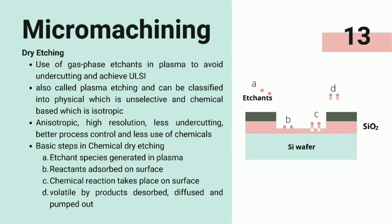The basic steps in the dry etching process are: etchant species or reactants are generated in plasma and then adsorbed onto the wafer surface. A surface chemical reaction takes place on the surface to facilitate etching. Volatile by-products are then desorbed, diffused, and pumped out after etching.